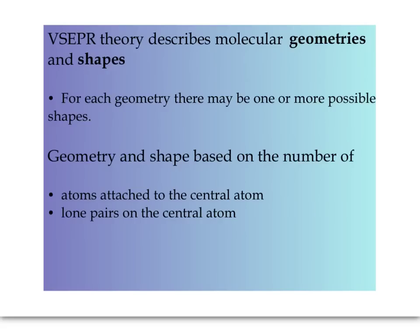VSEPR theory describes molecular geometries and shapes. There are multiple geometries, and for each one, there is one or more possible shapes. To determine geometry and shape, we are going to look at the central atom, how many atoms are attached to it, and how many lone pairs are on the central atom.